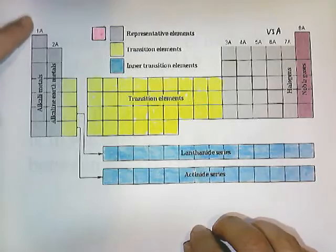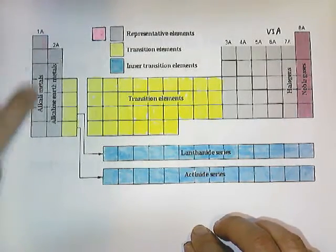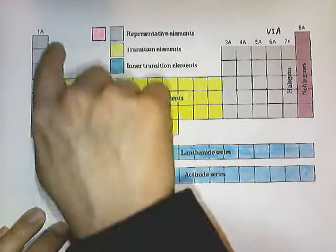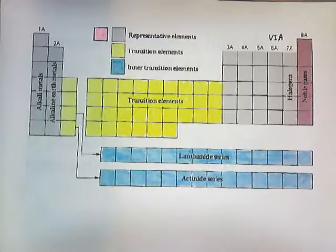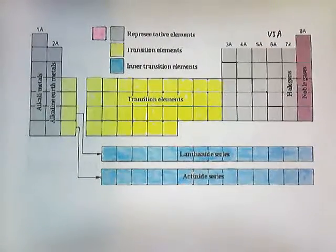Group 1 or 1A elements are called the alkali metals. Group 2 or 2A are called the alkaline earth metals.